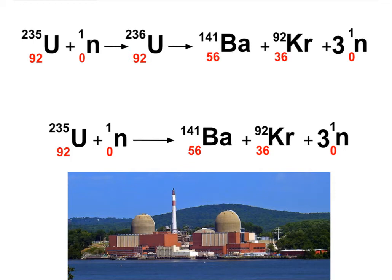To make our uranium more unstable — to change this nuclei into something that will decay faster — we are shooting neutrons into it. For a very short period of time, uranium-235 is transformed into a different isotope of uranium, uranium-236. This isotope is so unstable that almost immediately it splits into two smaller nuclei: barium-141 and krypton-92, and three neutrons released in the process.